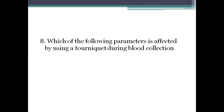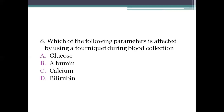Next question: which parameter is affected by using a tourniquet during blood collection? Option A: glucose. Option B: albumin. Option C: calcium. Option D: bilirubin. The right answer is option C, calcium. Extended use of a tourniquet increases serum total calcium levels by approximately 1.0 mg/dL. These variations in total calcium concentration are caused by hemoconcentration and hemodilution, because 50% of circulating calcium is protein-bound.